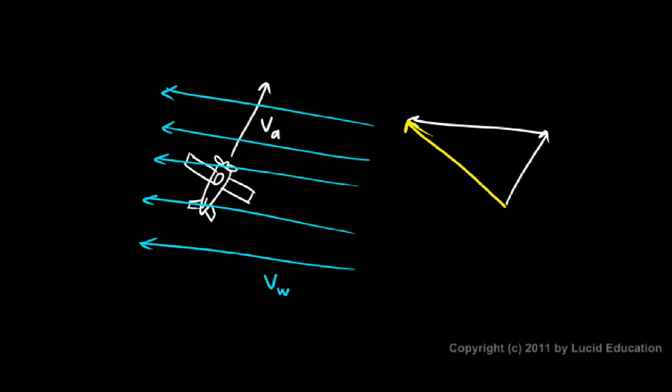But we don't necessarily have a right triangle. Because in the real world, the plane could be flying in any direction, and the wind could be blowing in any direction as well. It's very rare that they happen to be exactly at 90 degrees to each other.